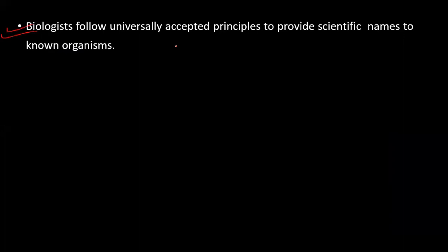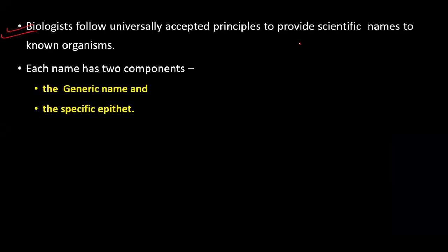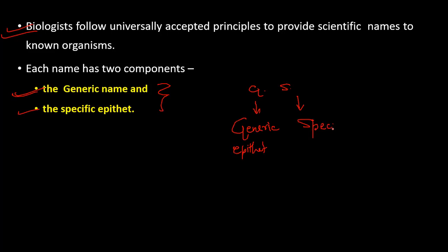Biologists follow universally accepted principles to provide scientific names to known organisms. Each name has two components: the generic name representing the genus, and the specific epithet representing the species.